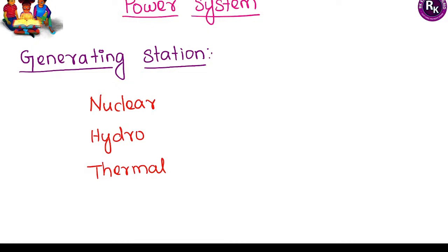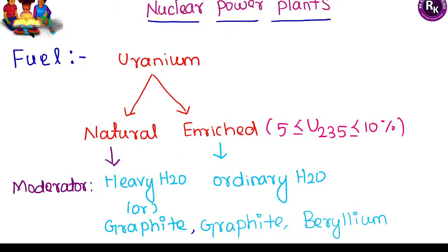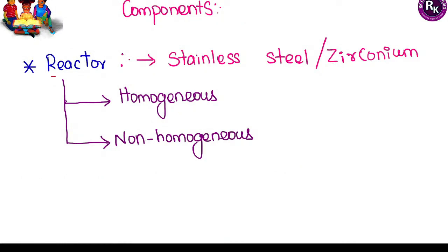We'll start from the electric station. The most important parameters of stations are nuclear, hydro, and thermal. For nuclear stations, the fuel used is uranium — there are two types: natural and enriched. In enriched uranium we have 5 to 10 percentage of uranium-235. The moderator used for natural uranium is heavy water, graphite, or beryllium; for enriched uranium we go with ordinary water.